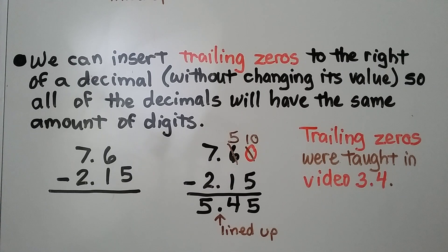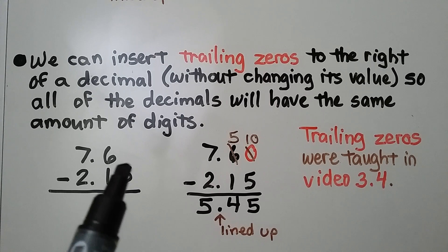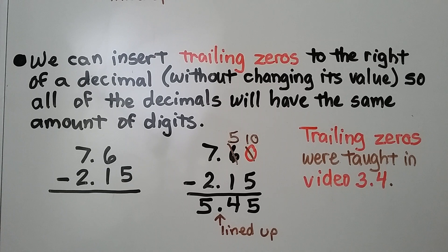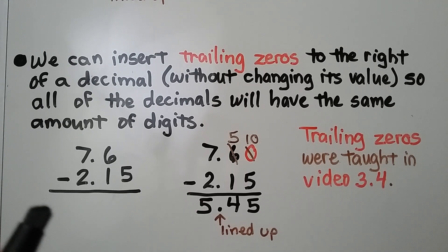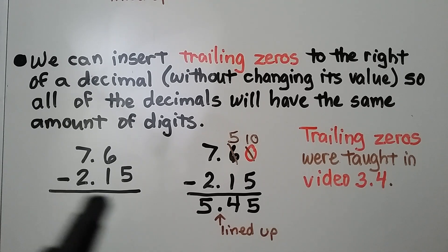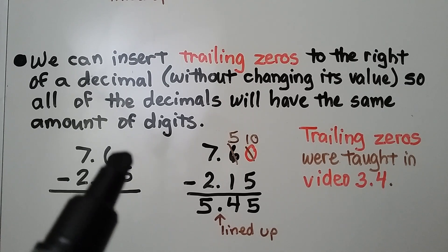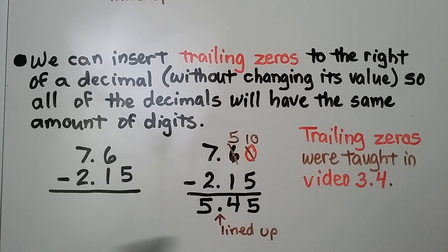Trailing zeros are zeros that we insert on the right side of a decimal. We can insert trailing zeros to the right of a decimal without changing its value, so all of the decimals will have the same amount of digits. If we have 7 and 6 tenths and we want to subtract 2 and 15 hundredths, we can put a trailing zero here and then we can subtract and regroup.